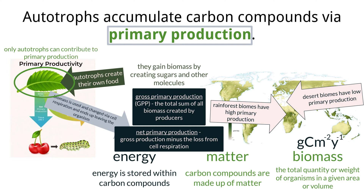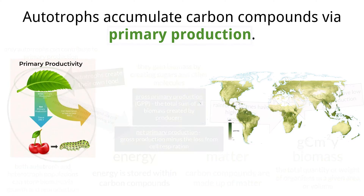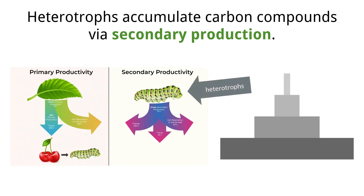Autotrophs are the only organisms that can contribute to primary production of biomass, though both autotrophs and heterotrophs can support the accumulation of biomass in an ecosystem — by growing, which increases the biomass of each individual organism, and by reproduction, which creates more organisms that store their own biomass. When calculating the biomass of an entire ecosystem, all of these living components, both autotrophs and heterotrophs, are counted.